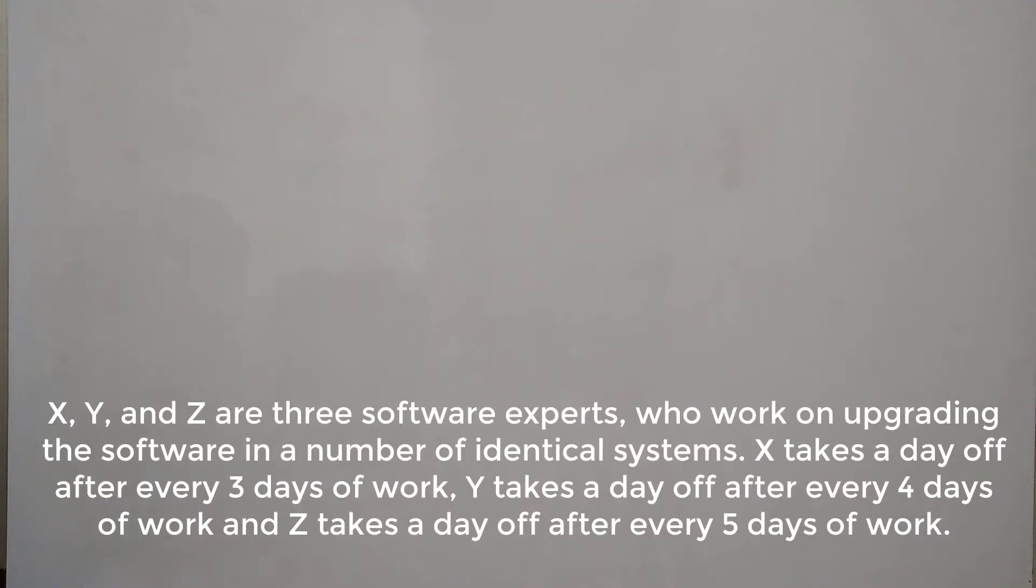X, Y and Z are three software experts who work on upgrading the software in a number of identical systems. X takes a day off after every 3 days of work, Y takes a day off after every 4 days of work, and Z takes a day off after every 5 days of work. So there are three workers X, Y and Z and they have a working and leave pattern. X works for 3 days and then takes a leave of 1 day, Y works for 4 days and then takes a leave of 1 day, and similarly Z works for 5 days and then takes a leave of 1 day. So this is what the working pattern is.